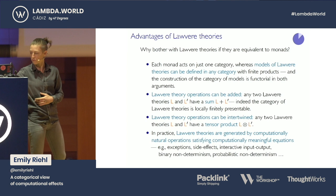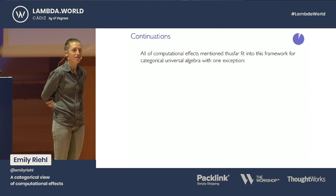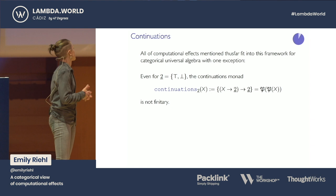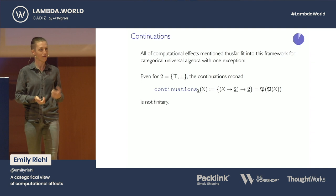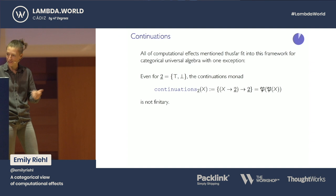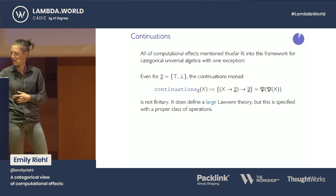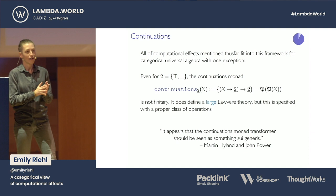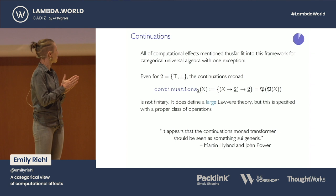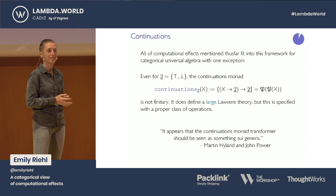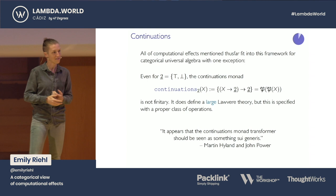There's one exception to this story: continuations. Continuations is not an instance of a finitary monad, so it's not encoded by any Lawvere theory. In the case of a set of two elements, what continuations does to X is return the double power set. It does define a large Lawvere theory in some sense, but specified with a proper class of operations. Martin Hyland and John Power say it appears that the continuations monad transformer should be seen as something sui generis. If you've tried to combine continuations with other computational effects and noticed issues, there's a theoretical reason — it doesn't fit into this Lawvere theory framework.